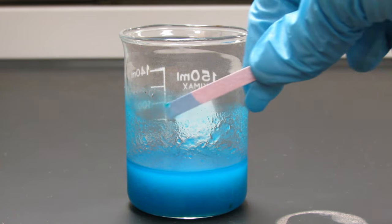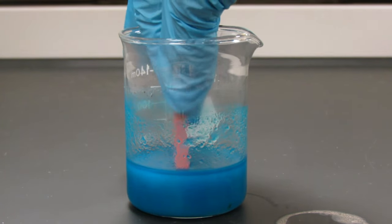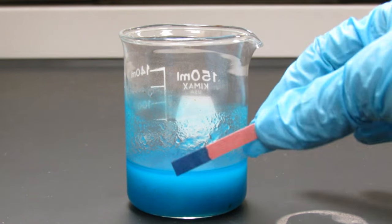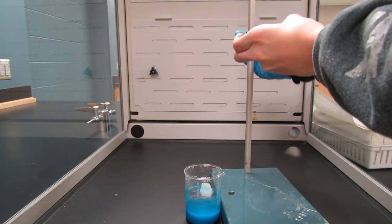Test this with red and blue litmus paper to make sure that it's basic. The blue litmus paper should stay blue, and the red litmus paper should turn blue, indicating we have a basic solution.